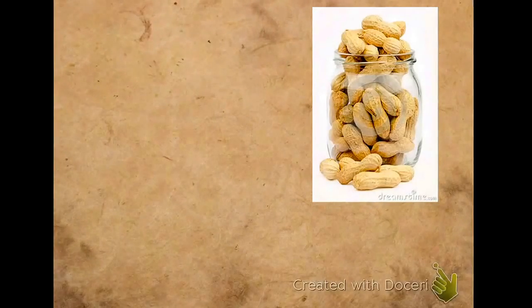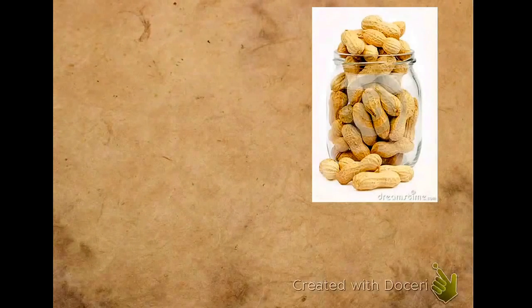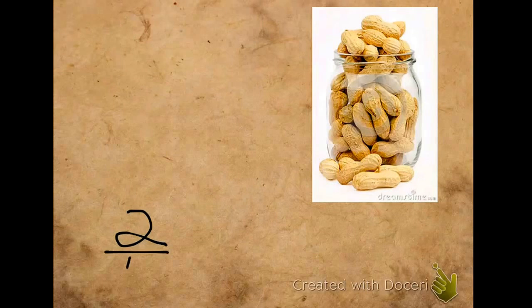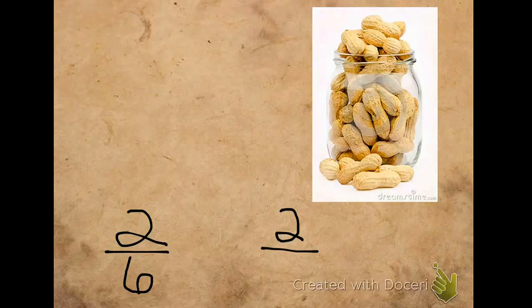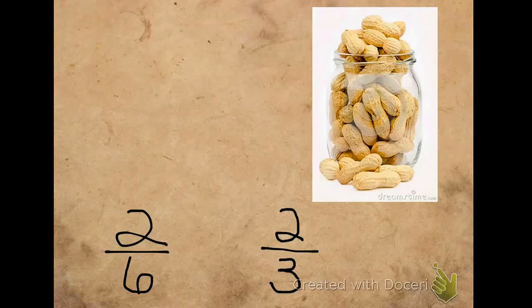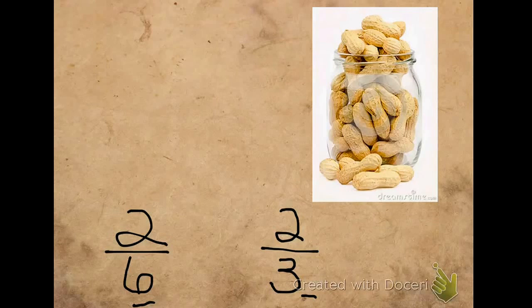Let's use benchmark fractions to help us compare fractions. Carrie wants to buy 2 sixths of a container of peanuts. Alan wants to buy 2 thirds of the same container of peanuts. Who's going to buy more peanuts? What we're trying to find is which fraction is greater, 2 sixths or 2 thirds? We need to know that the whole is the same size in order to help us compare these fractions.